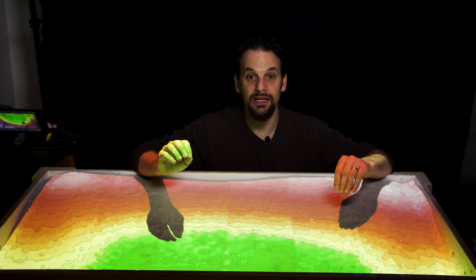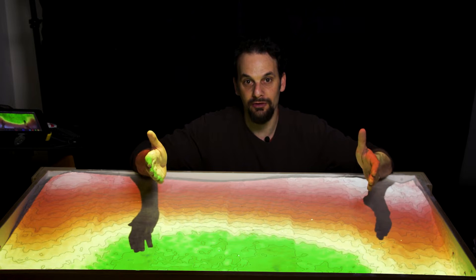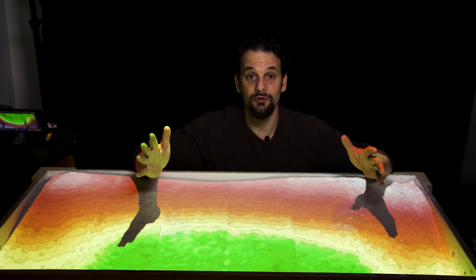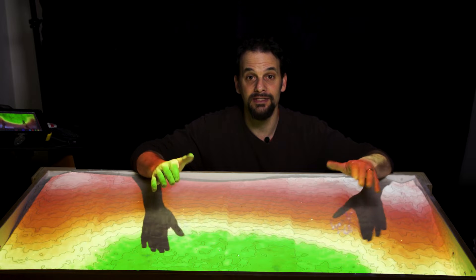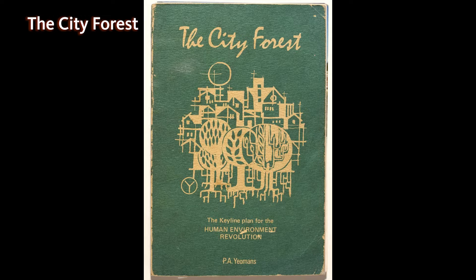Keyline design is a water and soil management system, primarily for designing farms in a rural landscape. But Yeomans also came up with a concept for applying keyline to the design of cities, and he wrote a book called The City Forest in 1971.